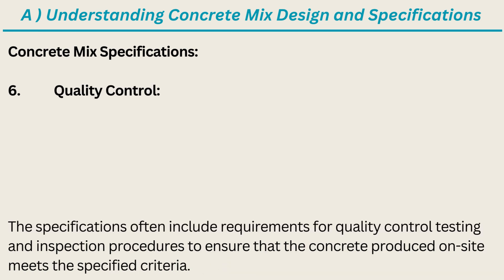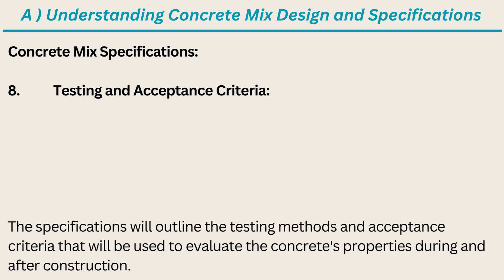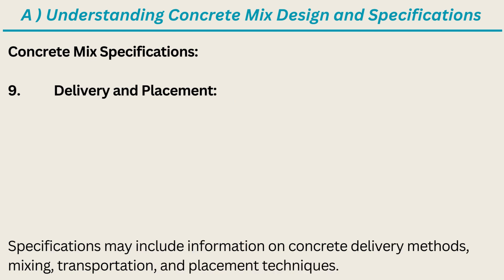Item 6: Quality Control. The specifications often include requirements for quality control testing and inspection procedures to ensure that the concrete produced on-site meets the specified criteria. Item 7: Curing and Protection. Instructions for curing and protecting the concrete after placement may also be included. Item 8: Testing and Acceptance Criteria. The specifications will outline the testing methods and acceptance criteria used to evaluate the concrete's properties during and after construction. Item 9: Delivery and Placement. Specifications may include information on concrete delivery methods, mixing, transportation, and placement techniques.